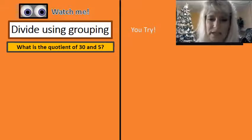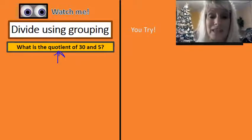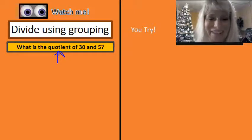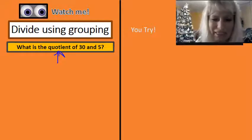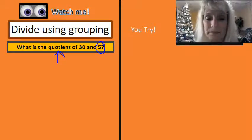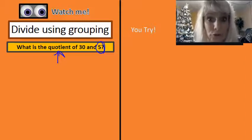First thing I want you to notice is that it says, what is the quotient? A quotient is going to be the answer to a division problem. So we're going to be getting a smaller number. I have five groups, and I'm going to divide 30 into those five groups. First, let's make our groups.